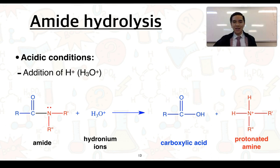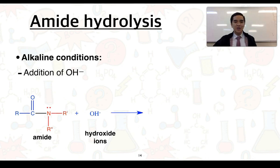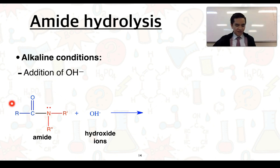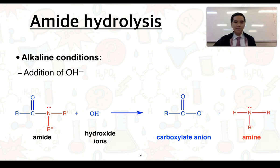Under alkaline conditions, this occurs in the presence of hydroxide ions. You just need to know the products and how to draw them. The equation shows our amide reacting with hydroxide ions. The carbon-to-nitrogen bond breaks. To the left, under alkaline conditions, we produce a carboxylate ion, which is negatively charged. To the right, we have our amine component — so under alkaline conditions, this produces an amine.